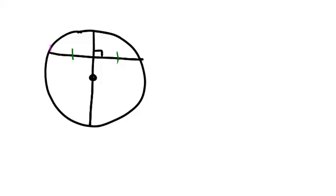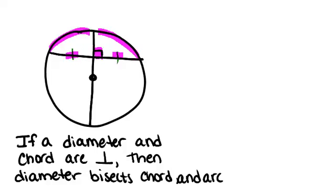That means that this arc will be congruent to this arc right there. Basically, if you know that there's a right angle right here, these other two things have to be the case as well. If a diameter and a chord are perpendicular, then the diameter will bisect the chord and the arc.